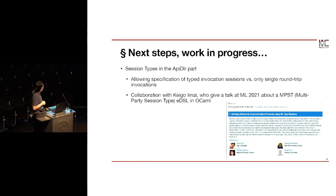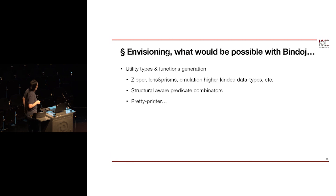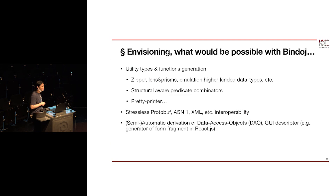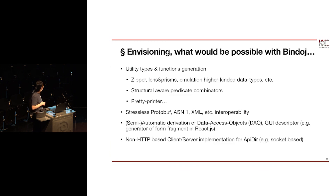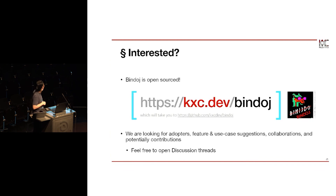The next step — which is kind of exciting for PL people — is that we are in the process of adding session type support to the API directory part. We're also adding support for more target languages and support for type cosmos, which allows you to add modularity and mutual recursive type descriptions. Envisioning further, we could generate zippers, structural traversal combinators, DAO objects, GUI components, and much more. If you're interested, we are open source and looking for contributors, feature suggestions, and feedback. Ready to take questions — thank you.